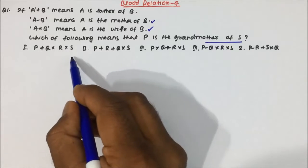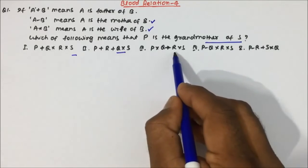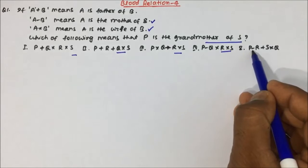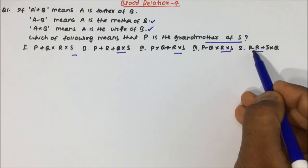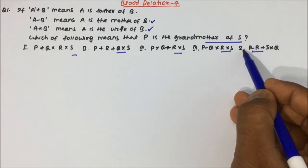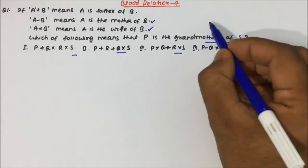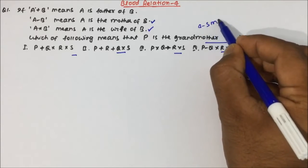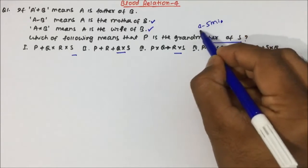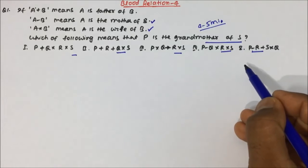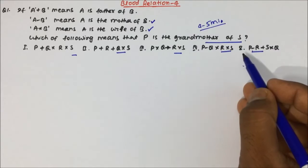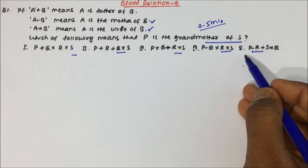The question asks: which of the following means that p is grandmother of s? For this, you would have to draw the blood relation tree for all five options, which would take a minimum of four to five minutes. So we will try to find some short tricks to solve it in fractions of seconds.